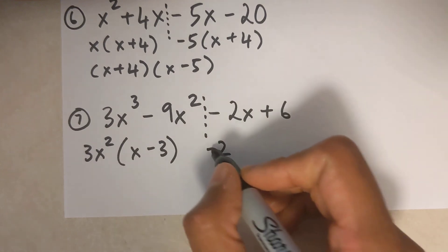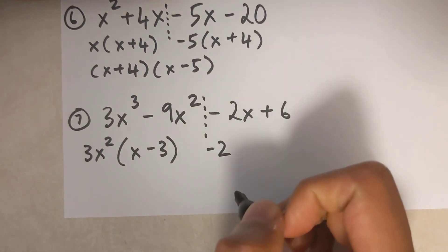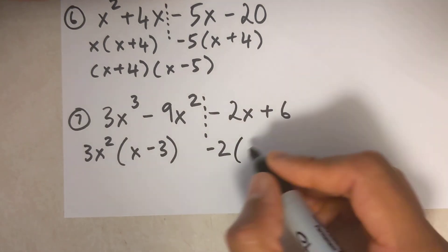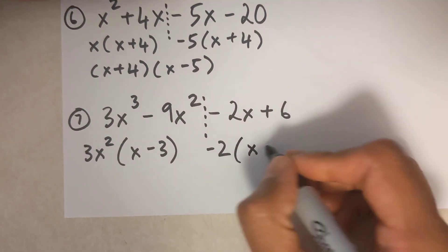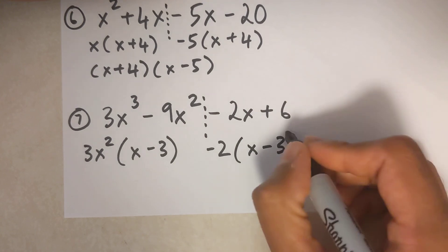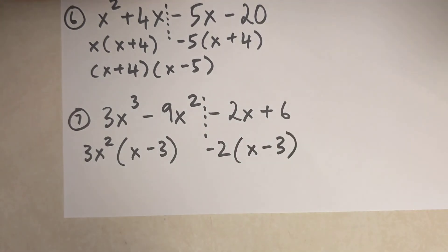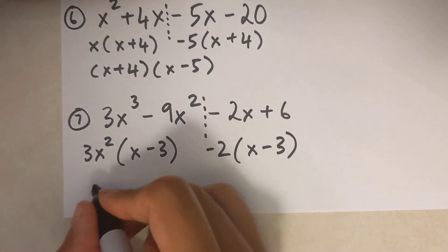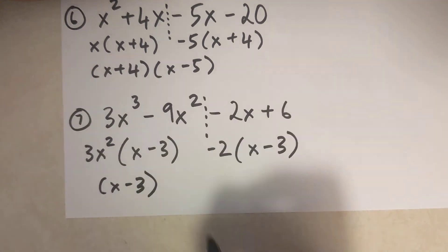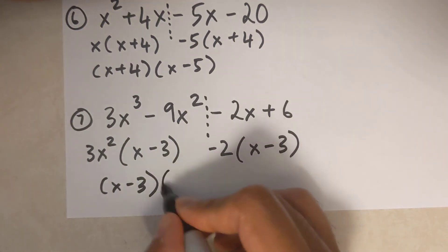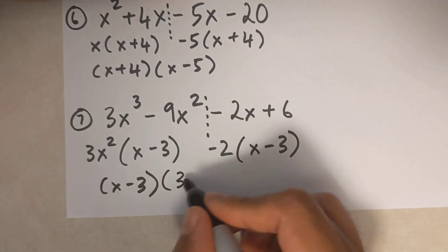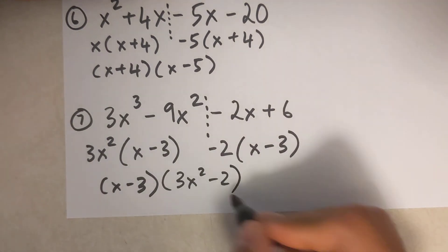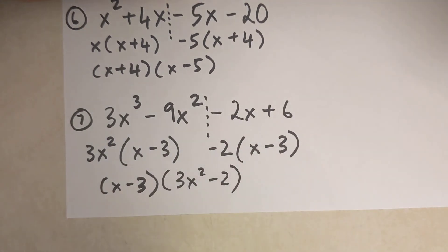Factoring out negative 2 turns this into x minus 3. The brackets are the same, so I common factor them out and my final solution is this.